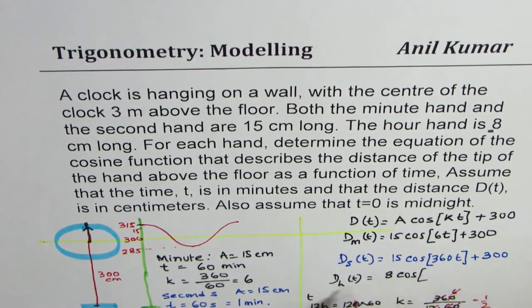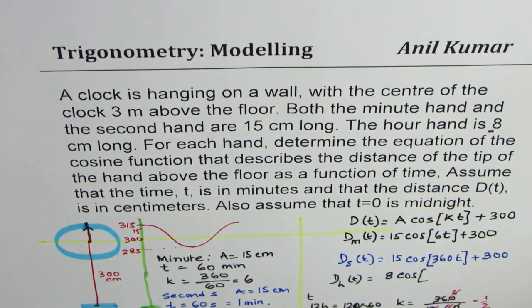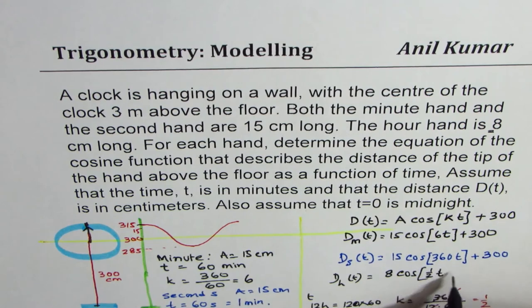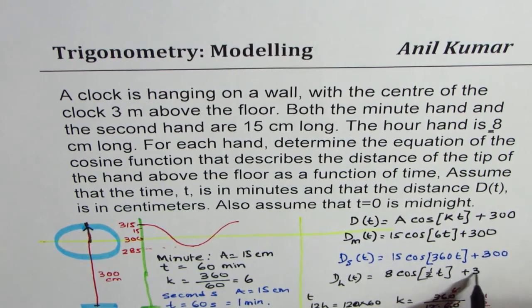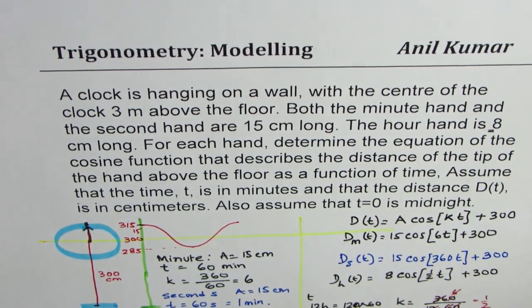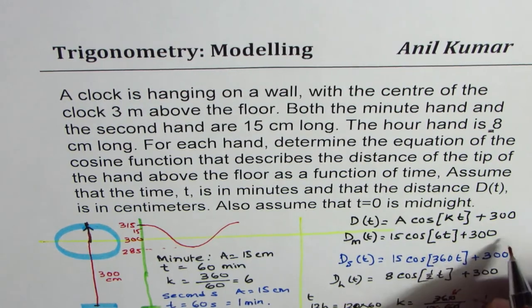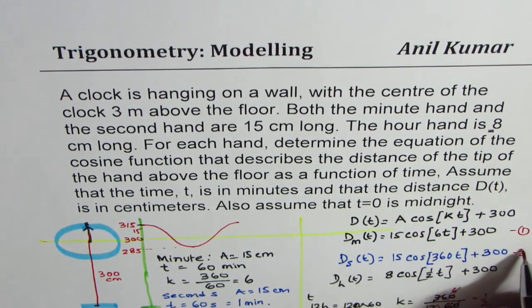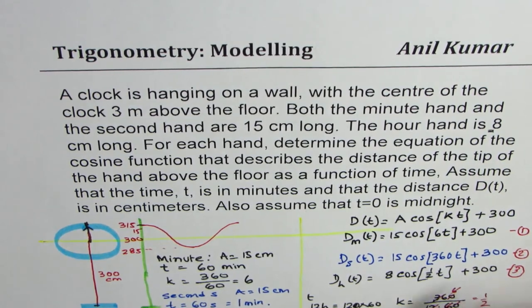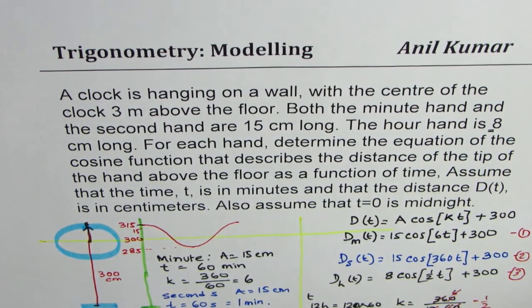And therefore, for the hour hand, the equation will be half t plus 300. So that is how you can get all the three equations: 1, 2, and 3.